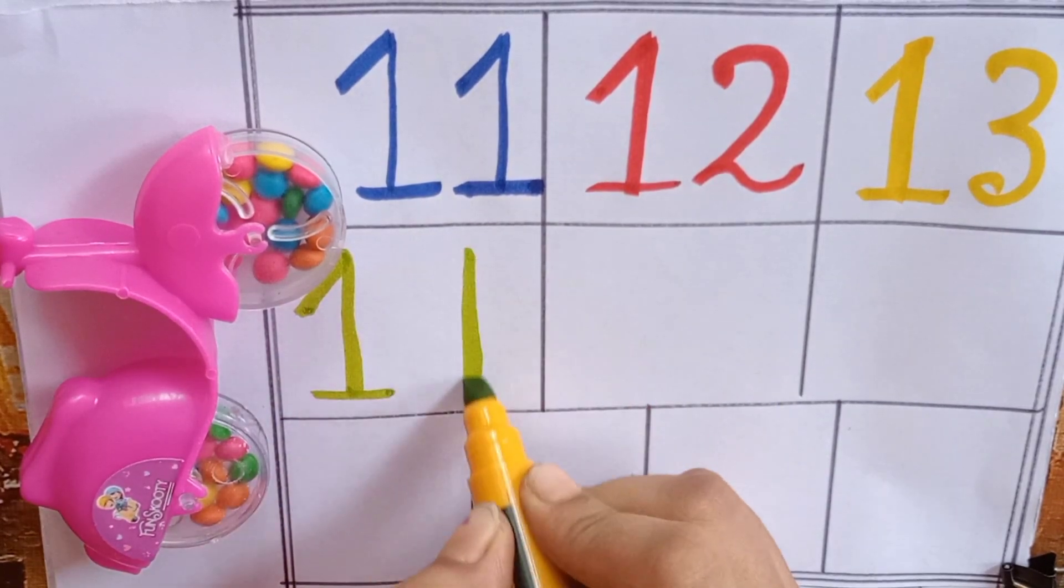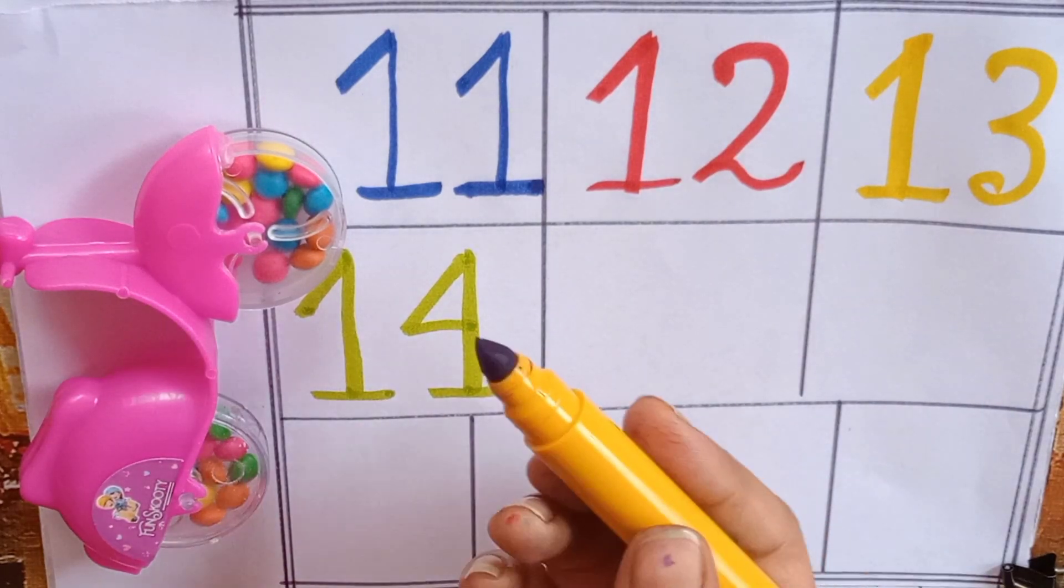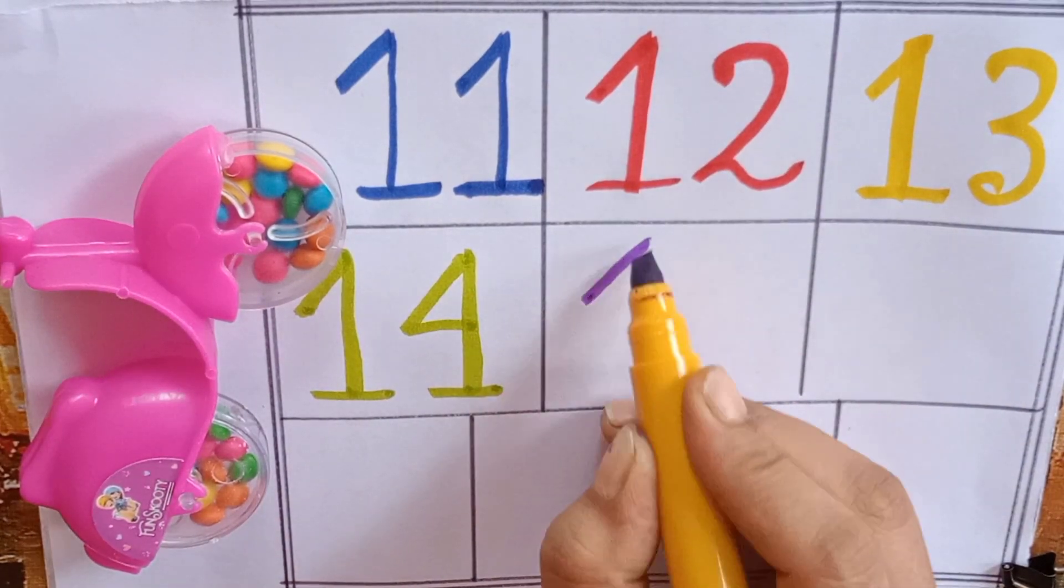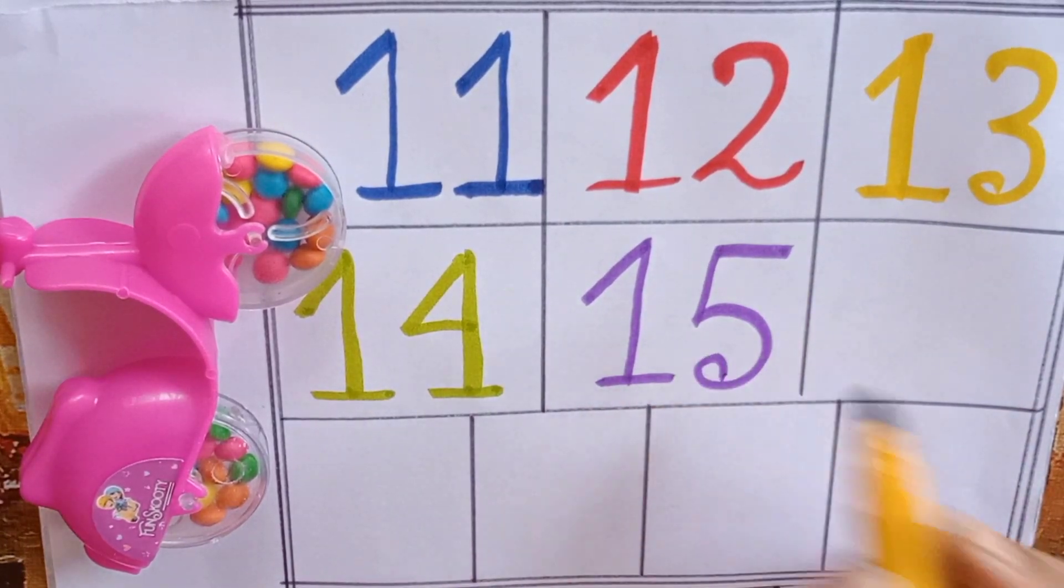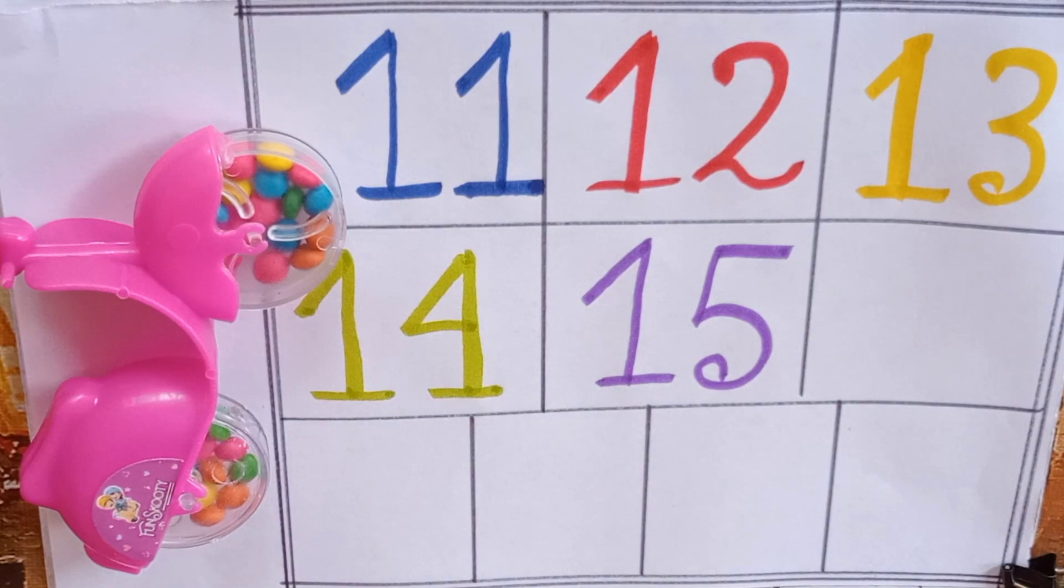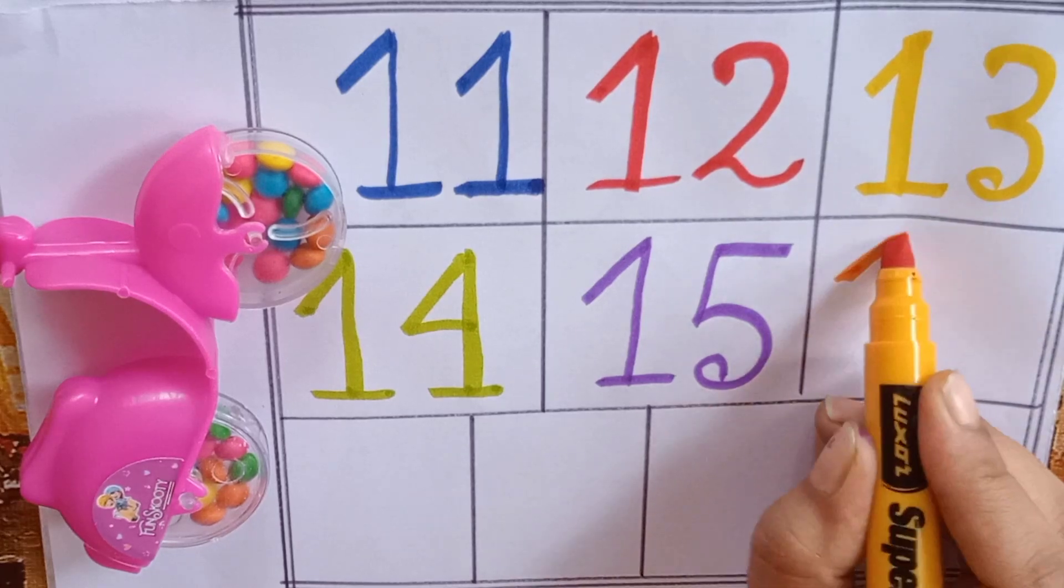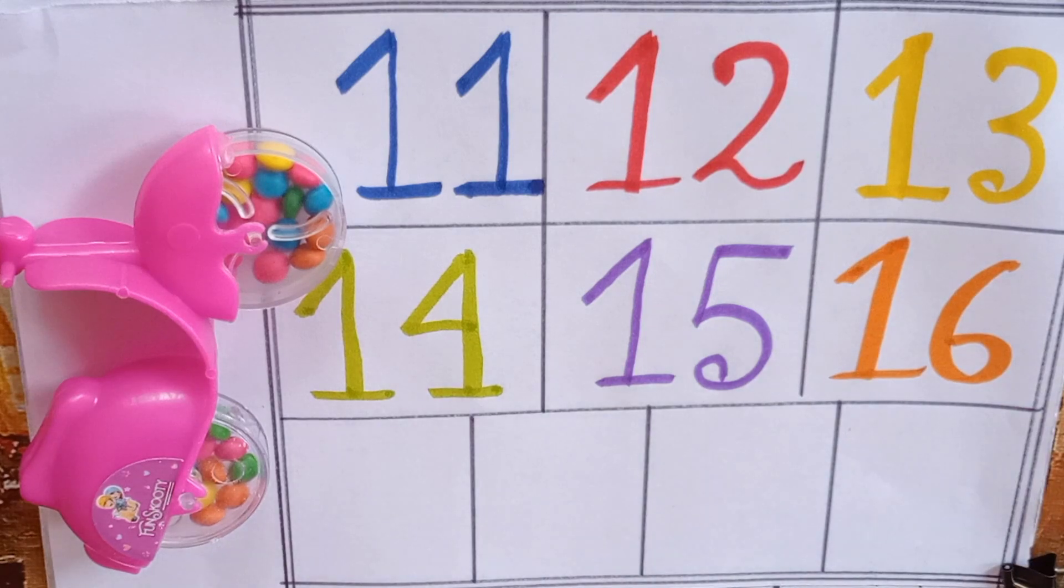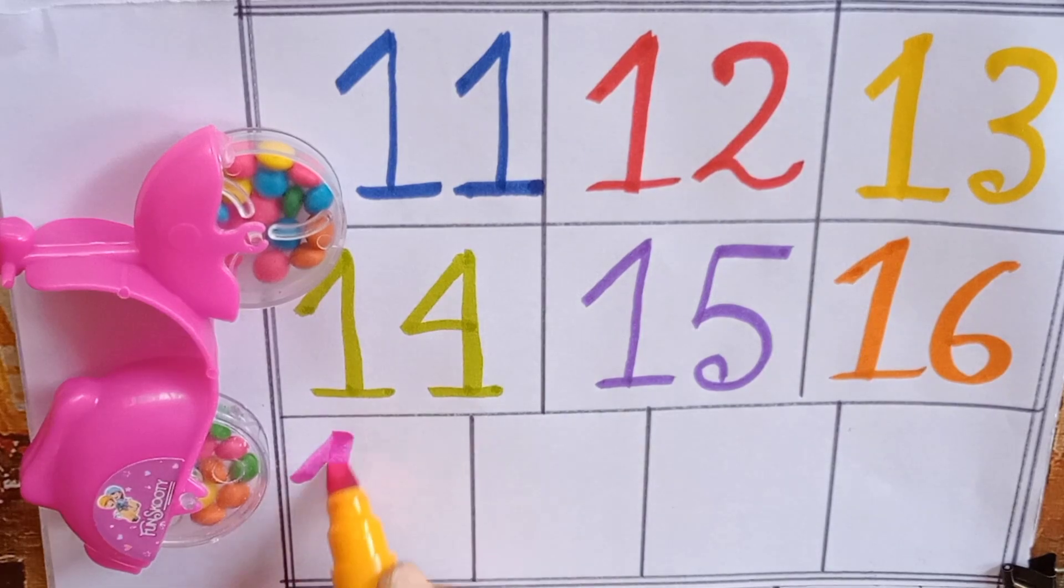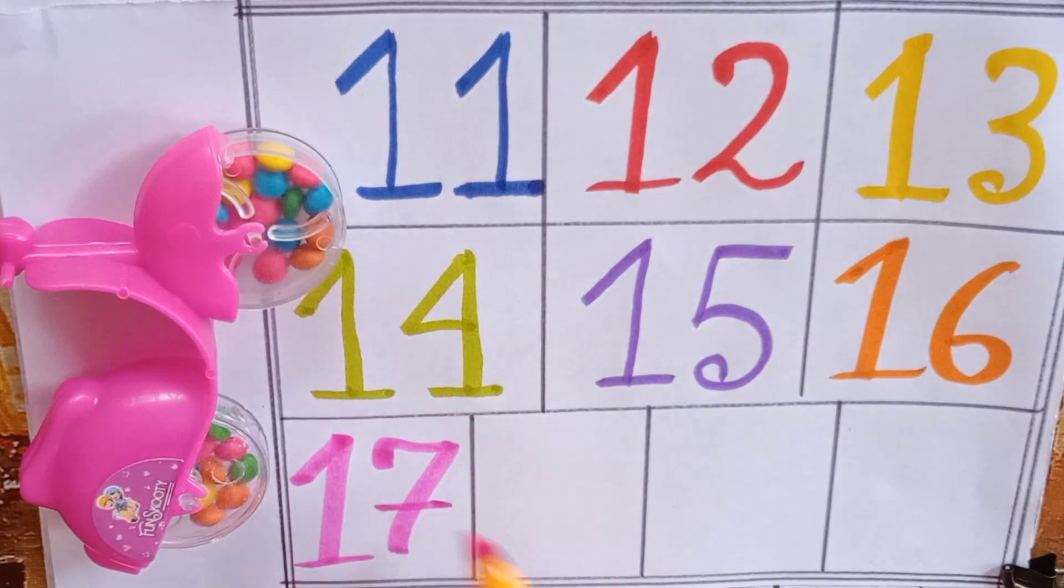Purple: one, five, fifteen. Orange: one, six, sixteen. One, seven, seventeen.